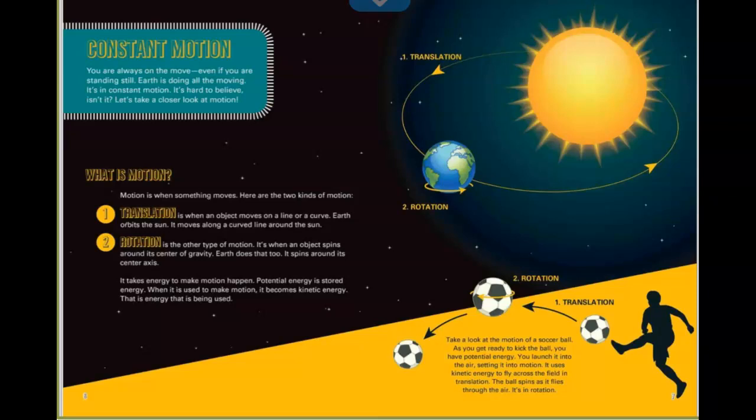Translation and rotation. Translation is when an object moves on a line or a curve. So here's translation. It's going around. Earth orbits the sun. It moves along a curved line around the sun. Now we don't see this line, but we know that it goes in the same path. Rotation is another type of motion. It's when an object spins around its center of gravity. Earth does that too. It spins around its center axis. So Earth is spinning this way, and while it's spinning, it's moving around the sun. So it's doing two types of motion at the same time.